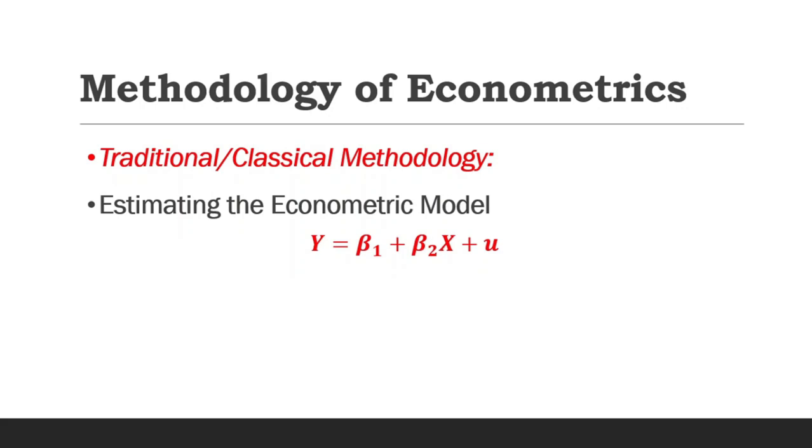And so we would get the values. Let's assume the values are actually beta 1 is 17.24 from the data and beta 2 is 8.97. If we fix this into the econometric model, we get the estimated model to be Y equals 17.24 plus 8.97X.